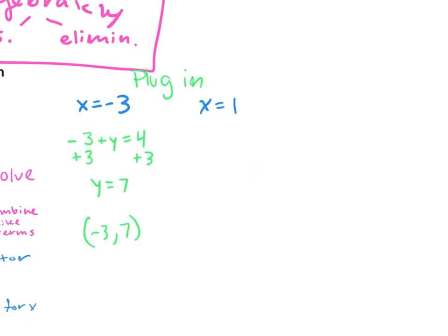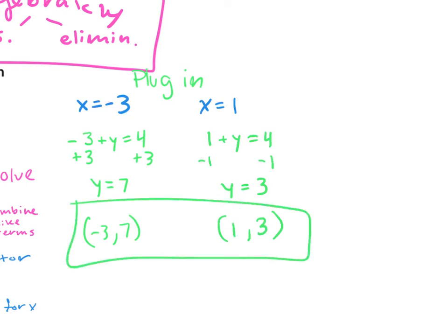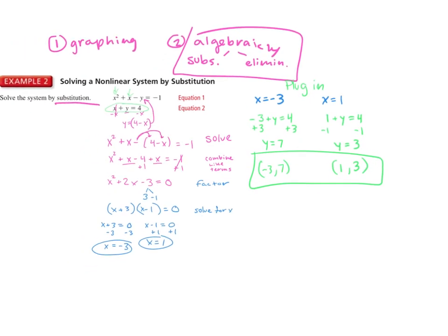For x equals 1, we have 1 plus y equals 4. We subtract 1 on both sides, so y equals 3. We write that answer as the coordinate point (1, 3). So here we have two solutions to our system of equations.